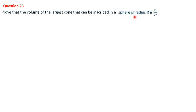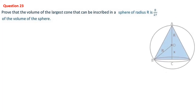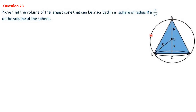Next, question number 23: prove that the volume of the largest cone that can be inscribed in a sphere of radius R is 8/27 of the volume of the sphere. A cone is inscribed inside a sphere — we can adjust the cone to be wider or taller, and among all such cones we must find the one with maximum volume and show it equals (8/27) × (4/3)πR³.